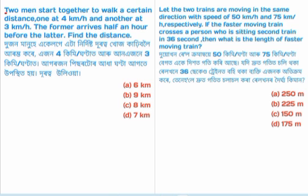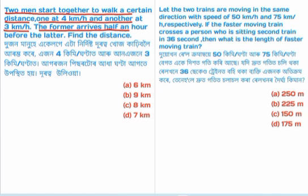Two people start together to walk a certain distance. One walks at 4 km per hour and the other at 3 km per hour. The faster person arrives half an hour before the slower one. Find the distance.